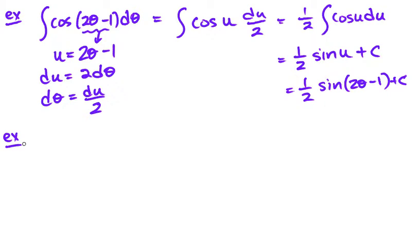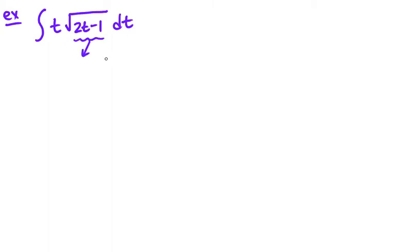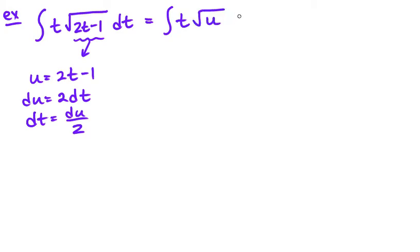Sometimes the simple substitution doesn't always do the trick. So here's a little additional tool that we sometimes need to use. We'll see that in this next example. So in this one, the complicated part is inside a square root. So 2t - 1 is our substitution and du becomes 2dt and dt is equal to du over 2. When I do my substitution, there's your t and this becomes the square root of u. And then dt becomes du over 2. And even changing the square root of u to u^(1/2) doesn't fully help because now I've got two variables in there.